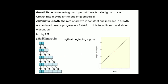Growth rate is the increase in growth per unit time. Growth rate may be measured in terms of arithmetical or geometrical expressions. In arithmetical growth, the rate of growth is constant and growth occurs in arithmetic progression — for example, 2, 4, 6, 8. It is found in root and shoot elongation. The equation for arithmetic growth rate is: Lt = L0 + rt.